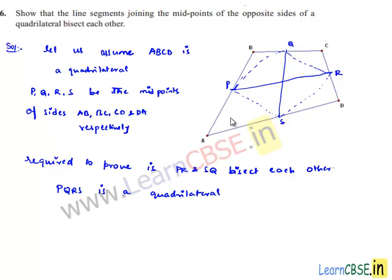Let us also join the diagonals of the quadrilateral, i.e., AC and BD. Now let us consider triangle ABC.